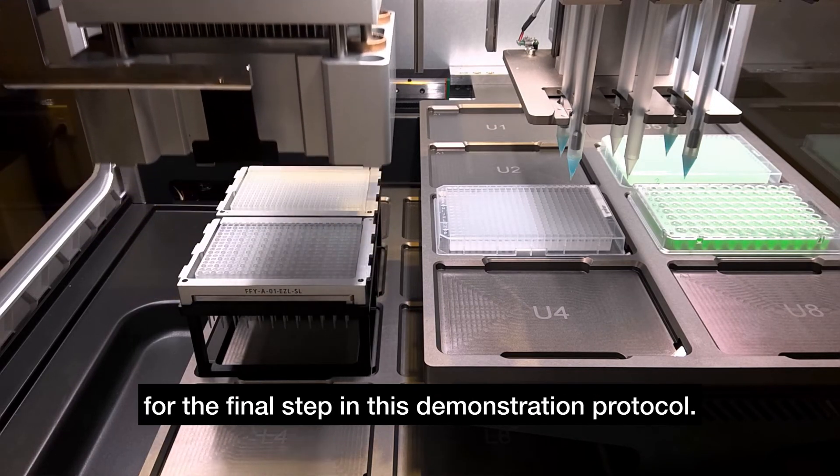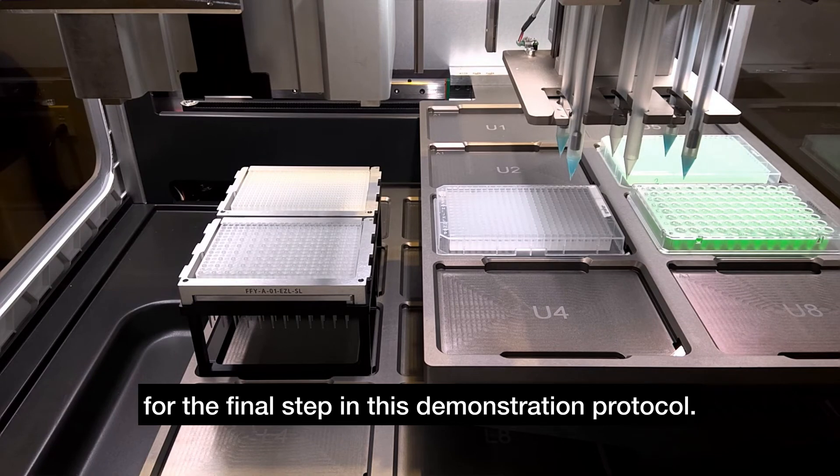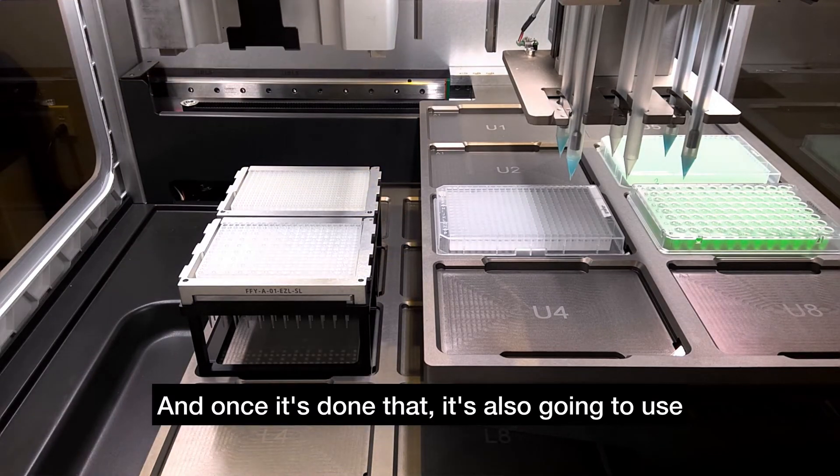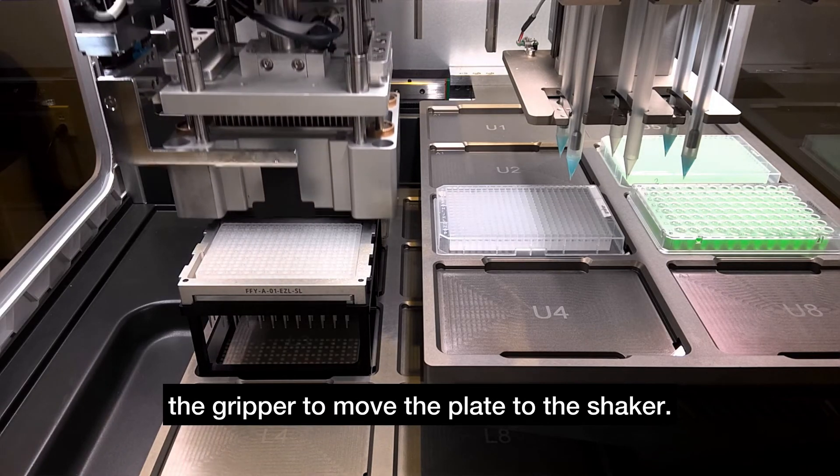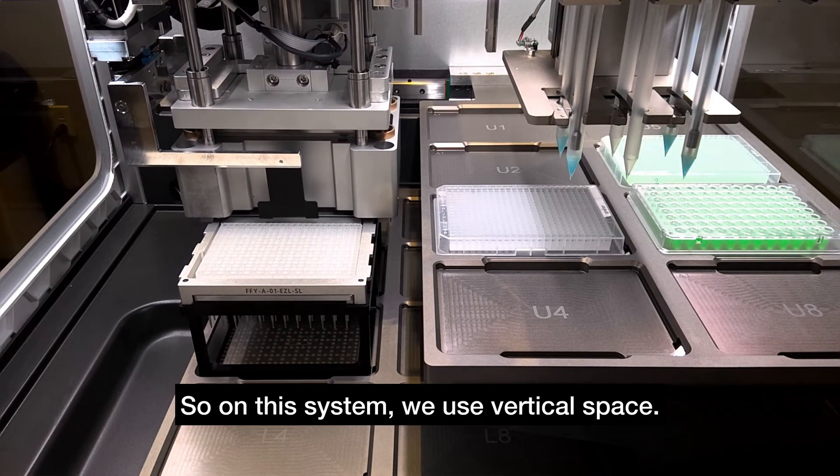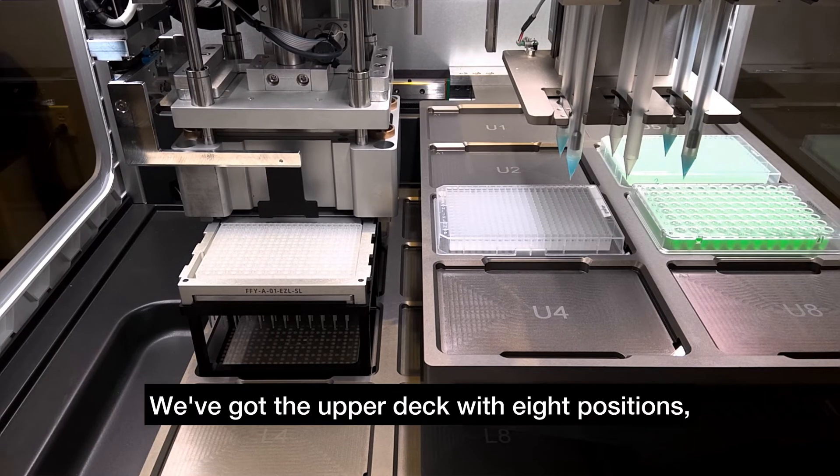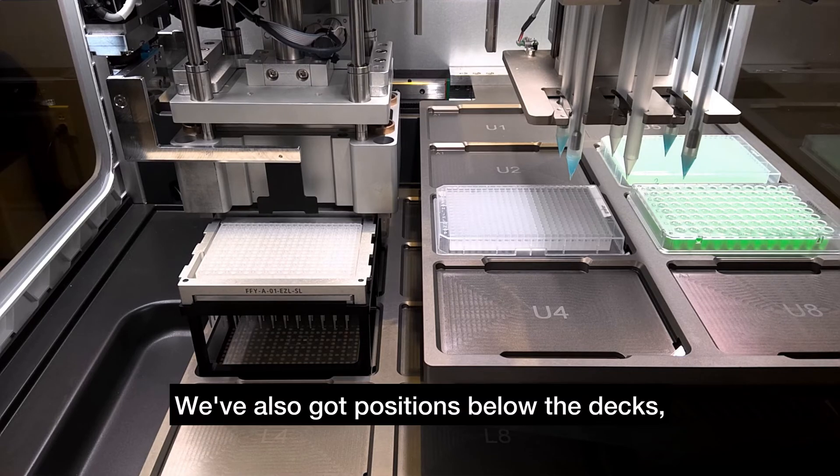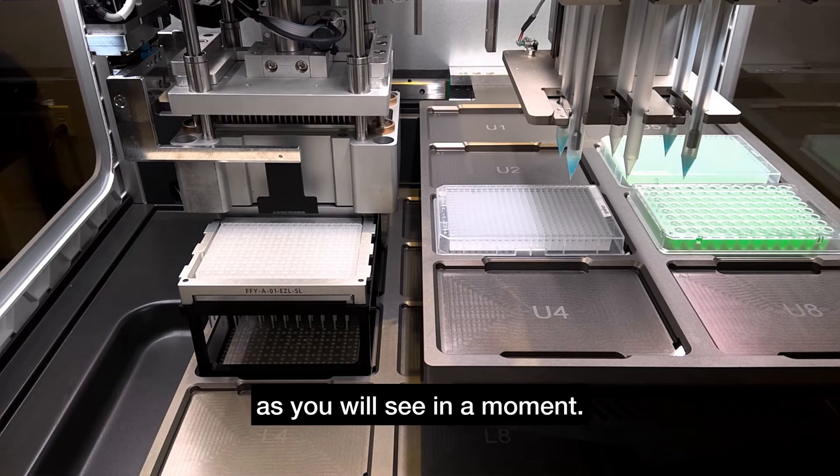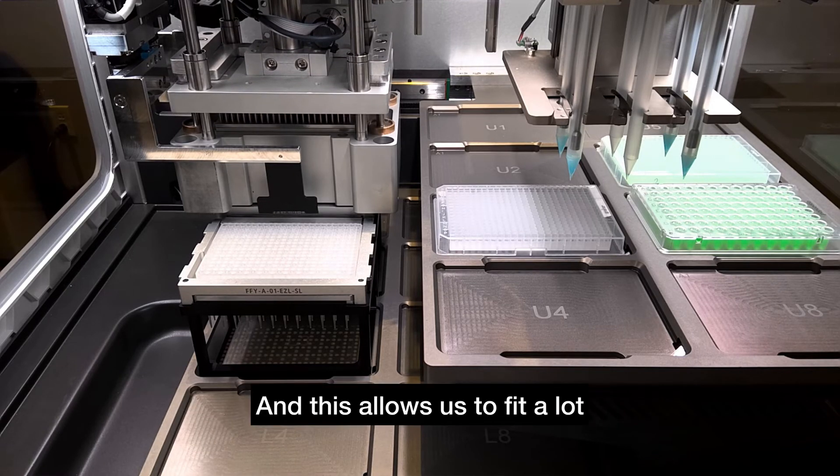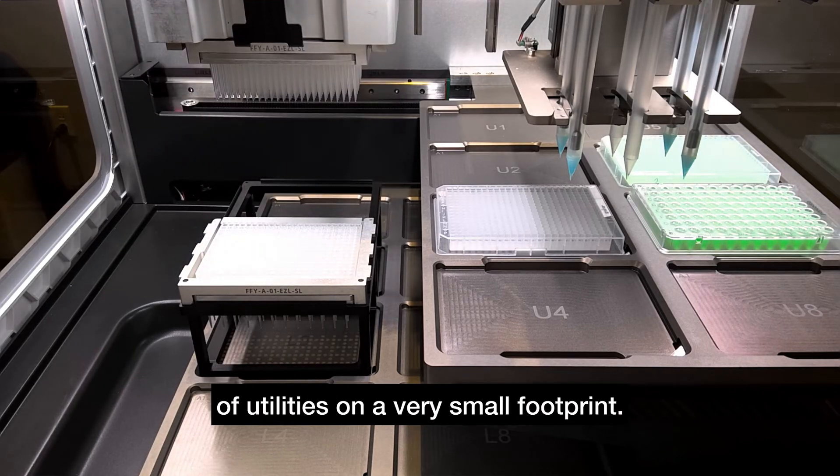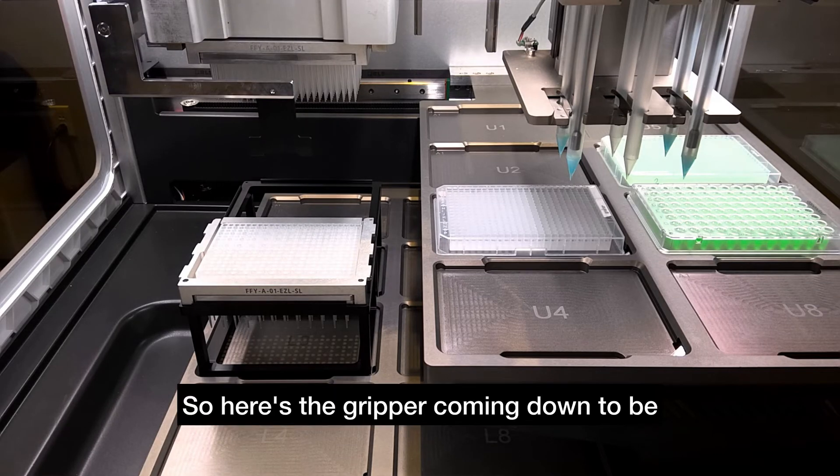Once it's done that, it's going to use the gripper to move the plate to the shaker. On this system we use vertical space—we've got the upper deck with eight positions, the lower deck with eight positions, and positions below the decks as you will see in a moment. This allows us to fit a lot of utilities on a very small footprint. Here's the gripper coming down to be used.